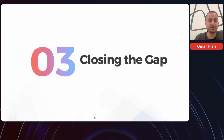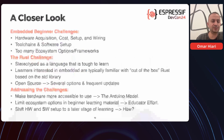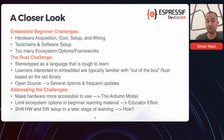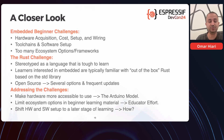So how do we close this gap? If we take a closer look, the challenges have to do mostly with hardware and software setup: hardware accessibility — whether it's acquiring, choosing a particular hardware, the cost of the hardware, setting it up, wiring it, which also implies knowledge about electronics — and then on the software end, tool chains and software setup, and the ecosystem options and frameworks that students have to choose from.